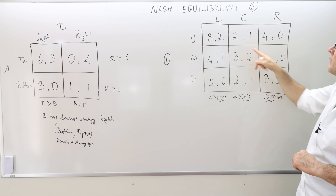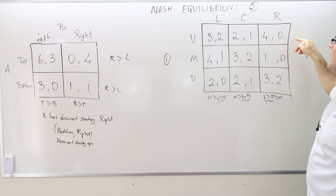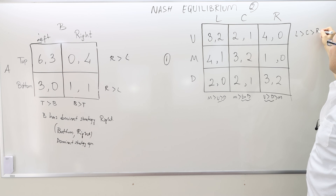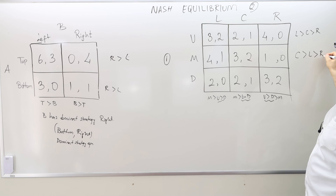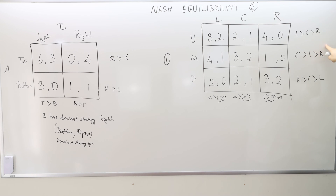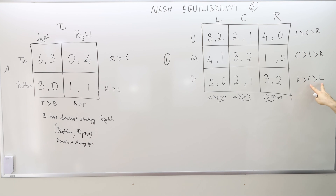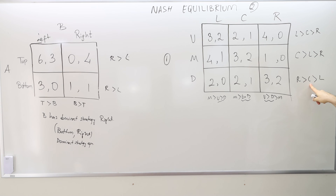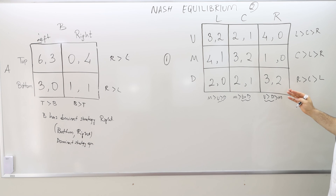What about player 2? We're comparing the second numbers across columns. Here L is better than C, which is better than R. Here C is better than L, which is better than R. And here R is better than C, which is better than L. So R never dominates anyone — sometimes better, sometimes worse. L never dominates anyone either — sometimes best, sometimes worst. C does not dominate L because L is sometimes better than C, and C is never dominating R because R is actually better than C sometimes. So there is no dominant strategy for player 2 either.